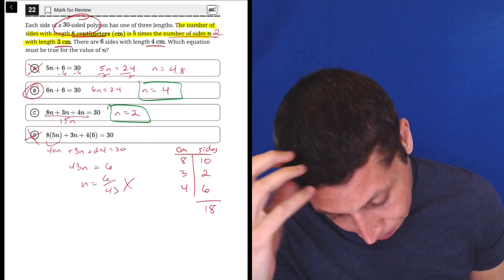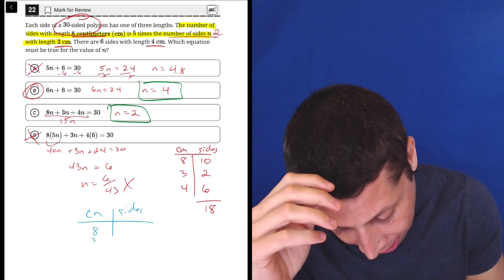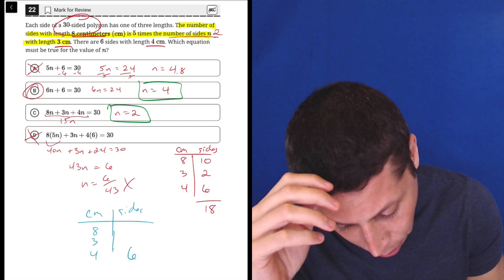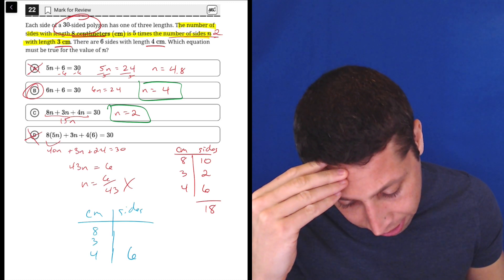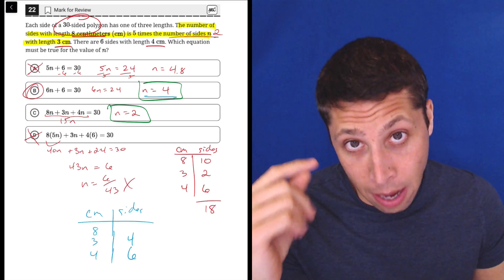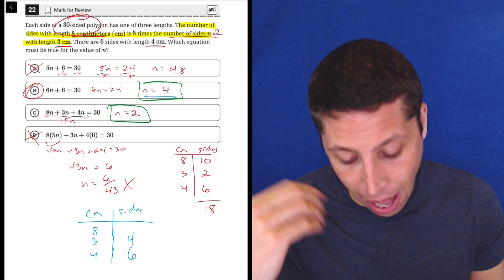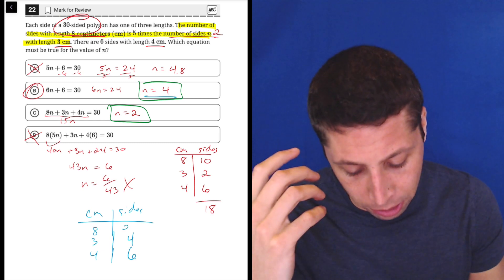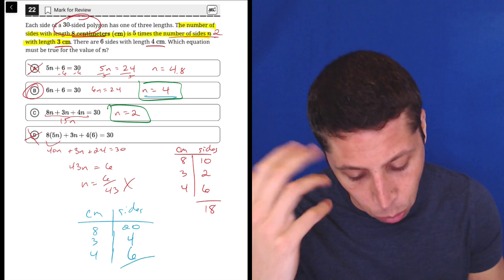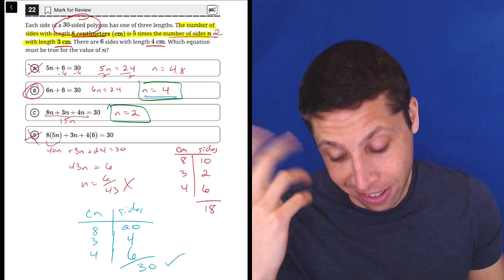But let's just do it with the chart for the sake of completion here. Let me choose a new color. So centimeters and sides. We've got, like I said, 8, 3, and 4. We know the 4 centimeter sides is 6. They just tell us that. So now if n is 4, that's the number of 3 centimeter sides. Then the 8 centimeter sides is 5 times that. So 5 times 4 is 20. And now add those up. 20 plus 4 is 24, plus 6 is 30. So there's my proof.